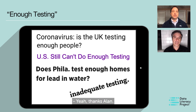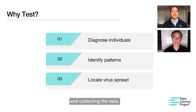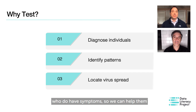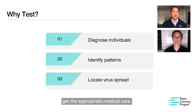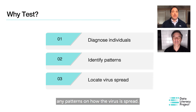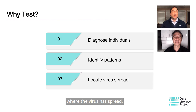Yeah, thanks Alan. There are really three main reasons for testing people and collecting the data. First, so that we can diagnose individuals who do have symptoms, so we can help them get the appropriate medical care. Then after that, we want to identify any patterns on how the virus has spread. And third, we want to identify potentially where the virus has spread or is going to spread, and to what extent.